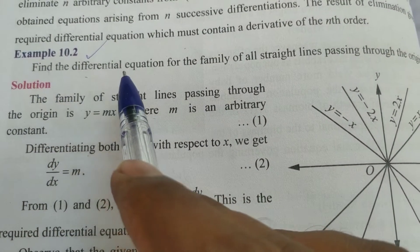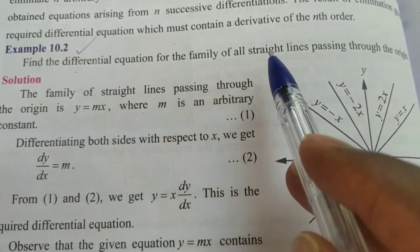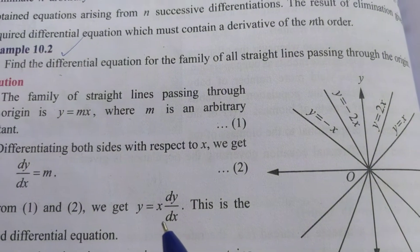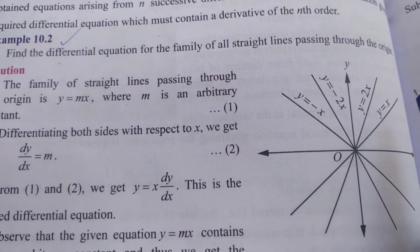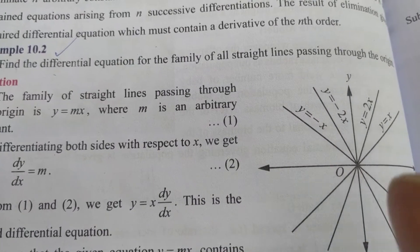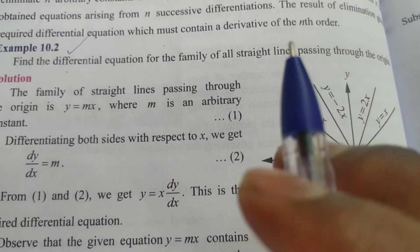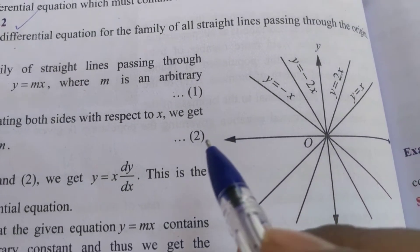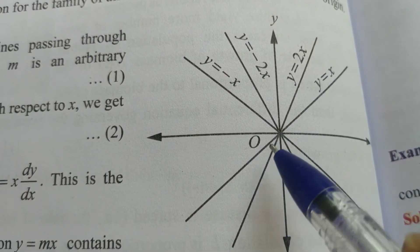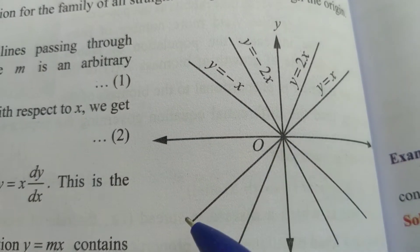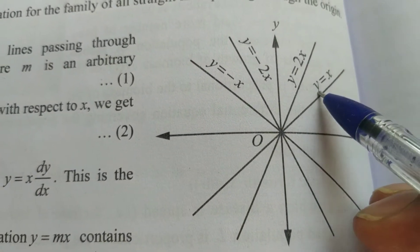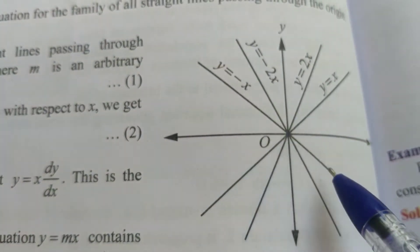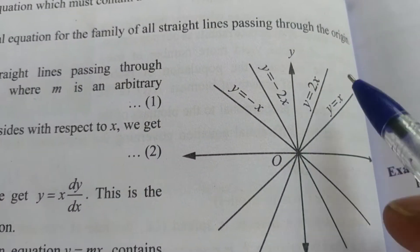Find the differential equation for the family of all straight lines passing through the origin. If we look at the origin, we will select all the family of straight lines. This is the x-axis, this is the y-axis, and this is the origin. The family includes y equal to x, y equal to minus 2x, y equal to minus x — all straight lines passing through the origin.